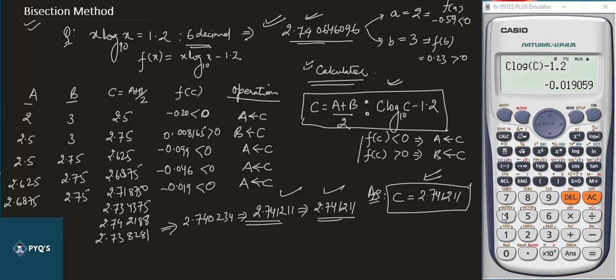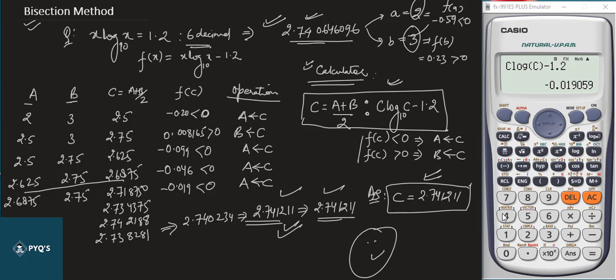Note: if we had chosen better initial values like A = 2.6 and B = 2.7, we would have reached this answer in about five iterations instead of eleven. This is how knowing the real root helps you choose good initial values. That's all for this lecture — please share, like, and subscribe. Thank you.